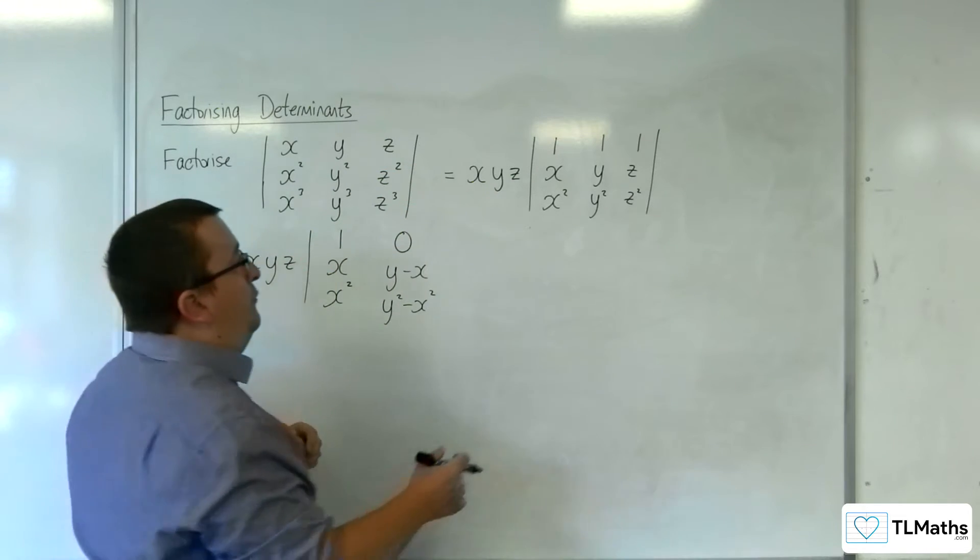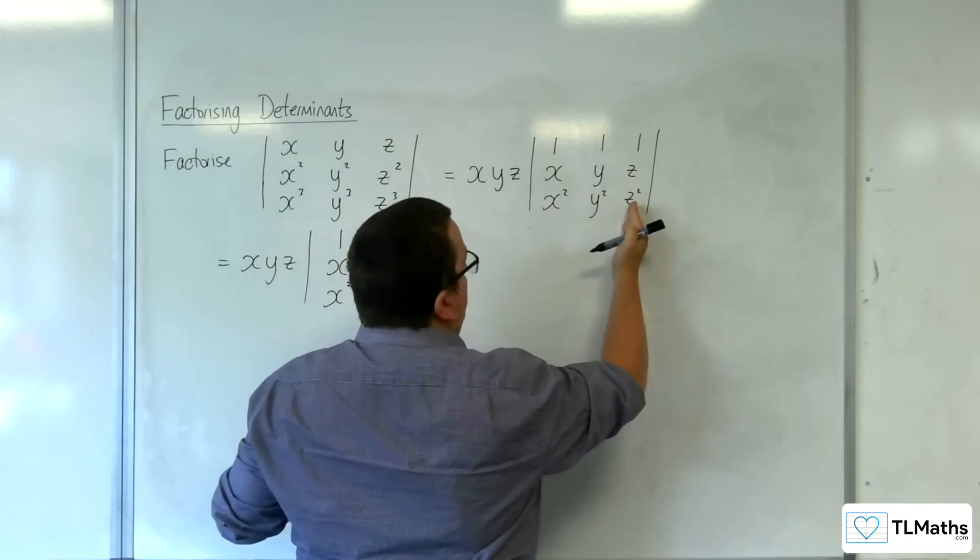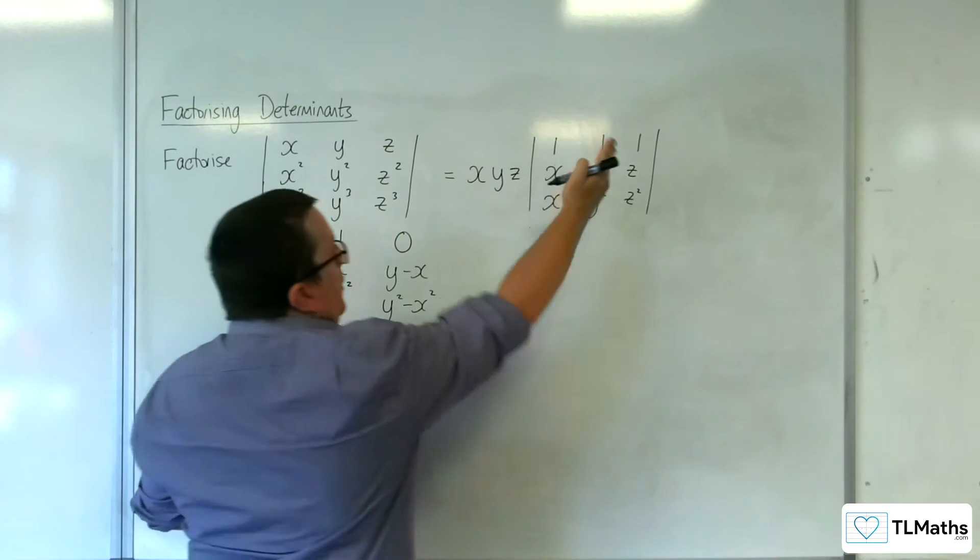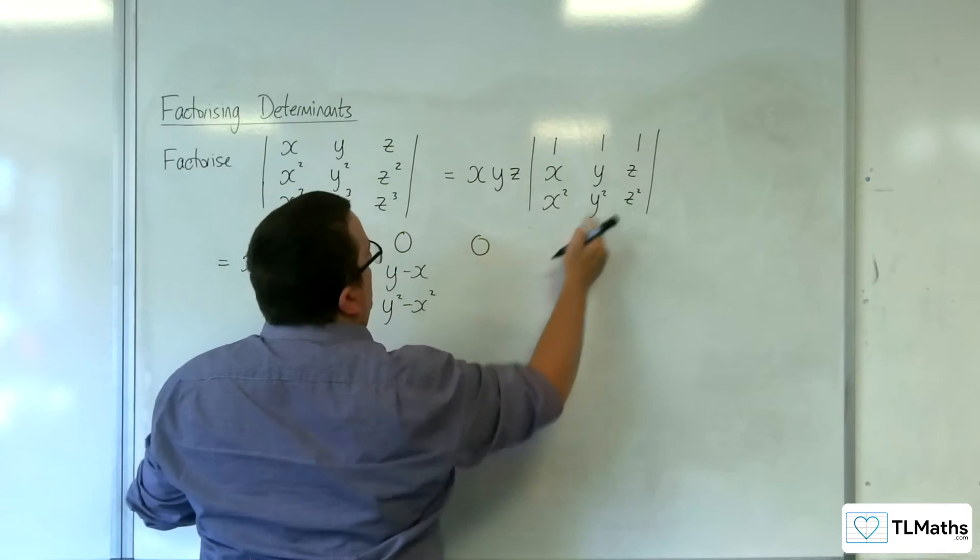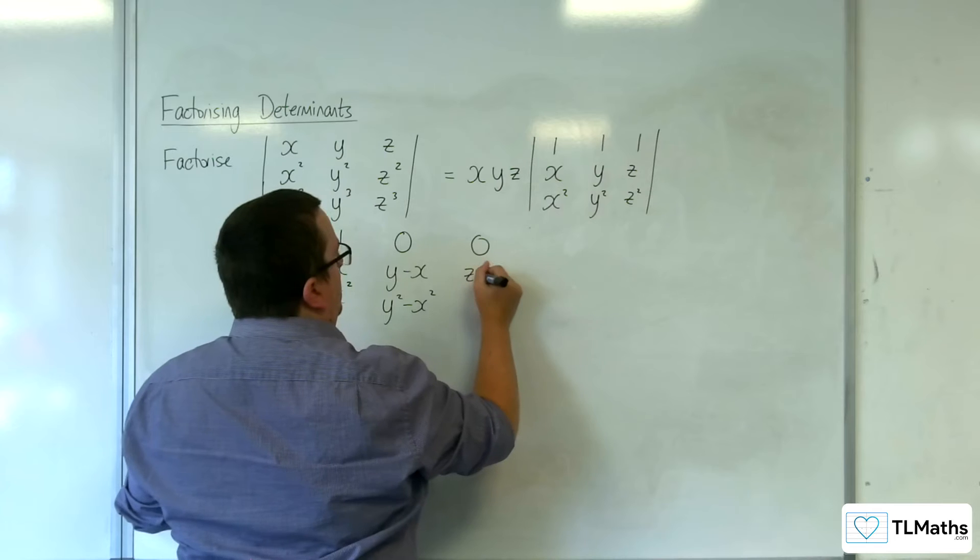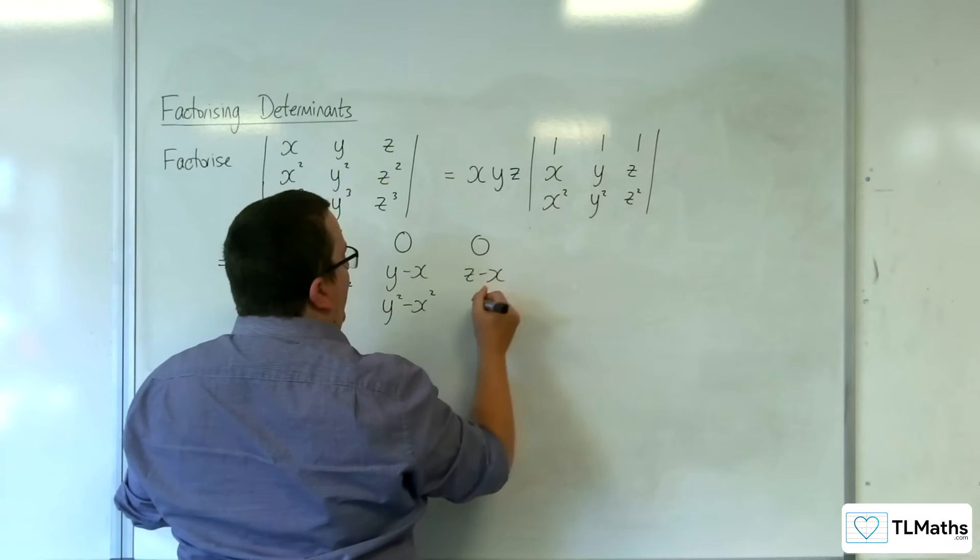I can also do the same for column 3. I could do column 3 take away column 1. So 1 take away 1 is 0, z take away x, and z squared take away x squared.